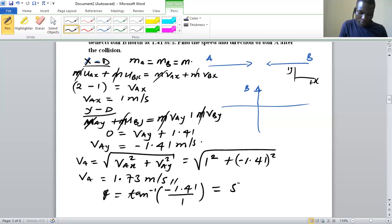So the angle is 54.7 degrees. This ball moved in that direction—we see that this is southward and east, so it moved southeast with velocity 1.73 m/s.